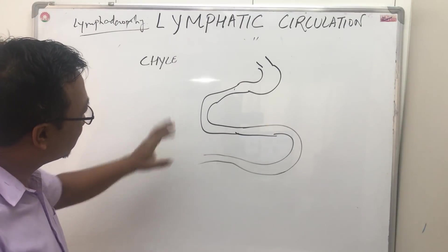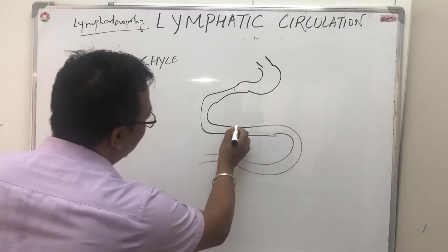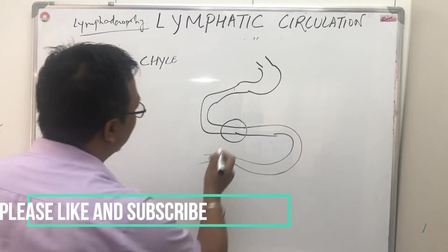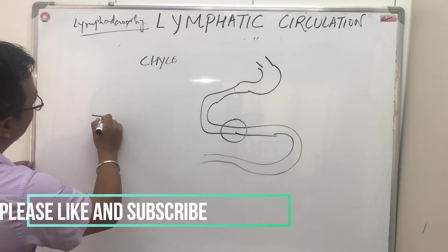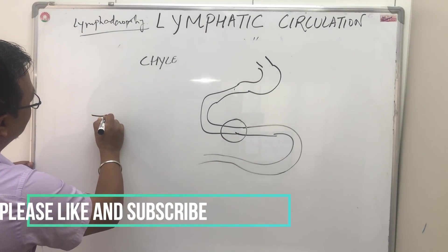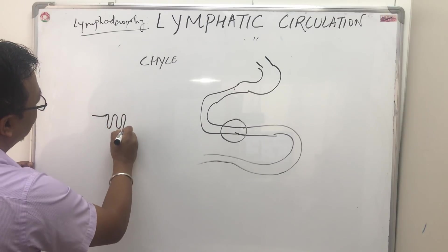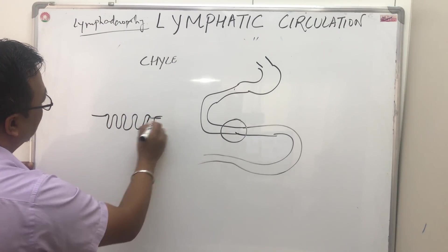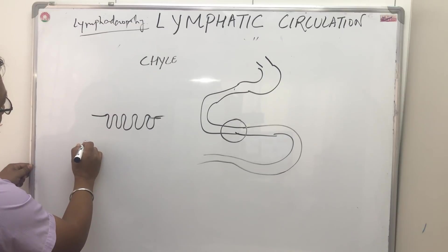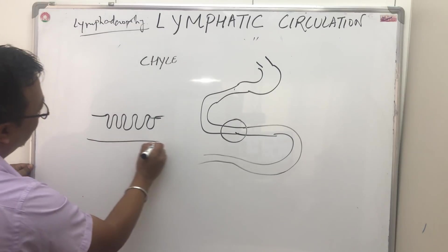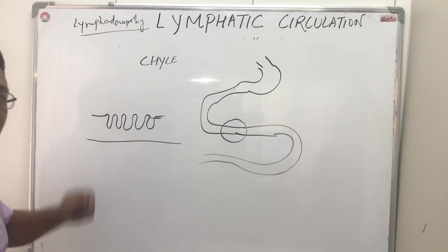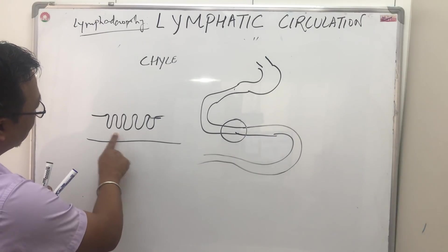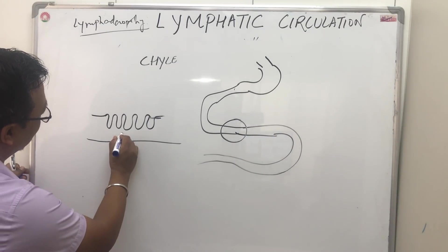If you go for the anatomy of the small intestine, the whole intestine is in the form of intestinal villi, which are finger-like projections. Inside these villi, there is the lumen.